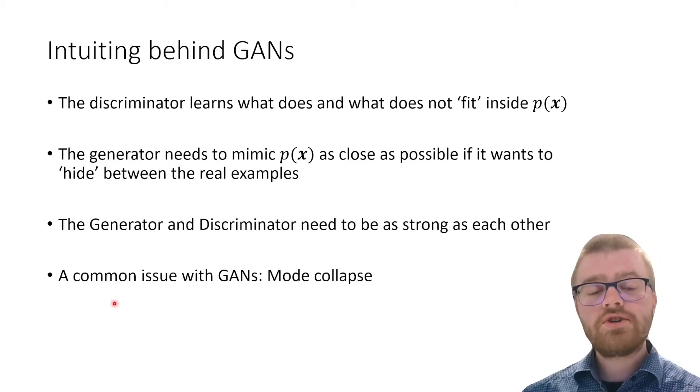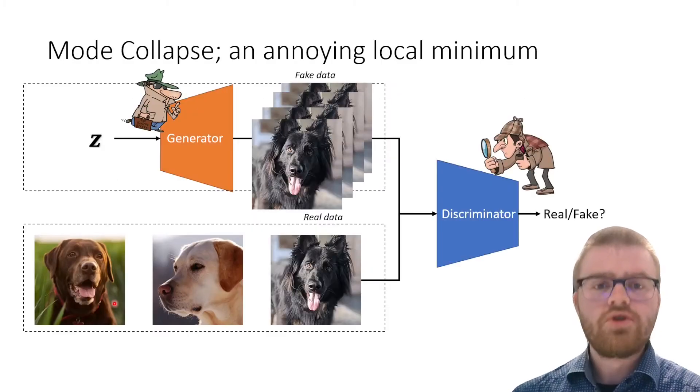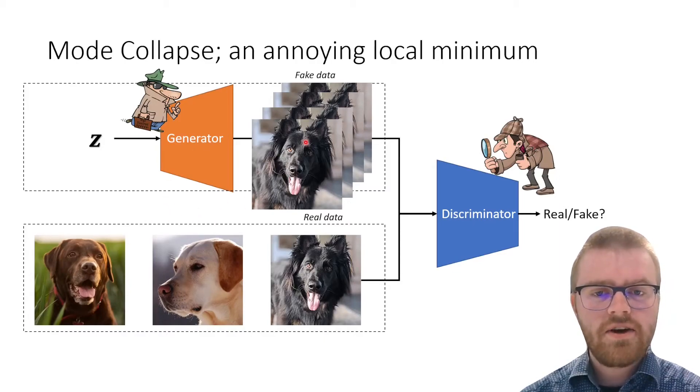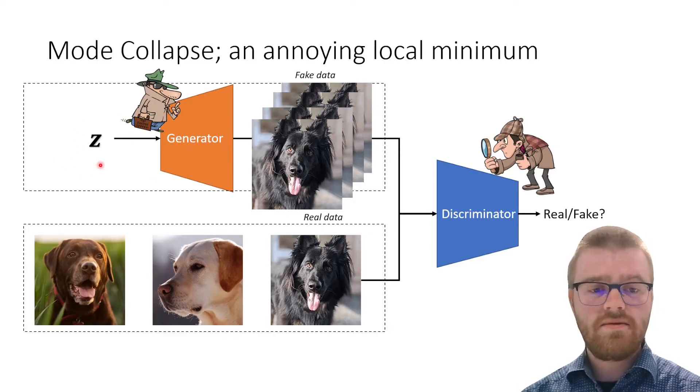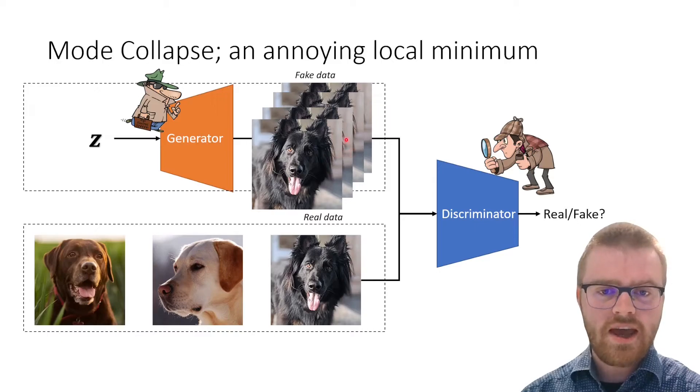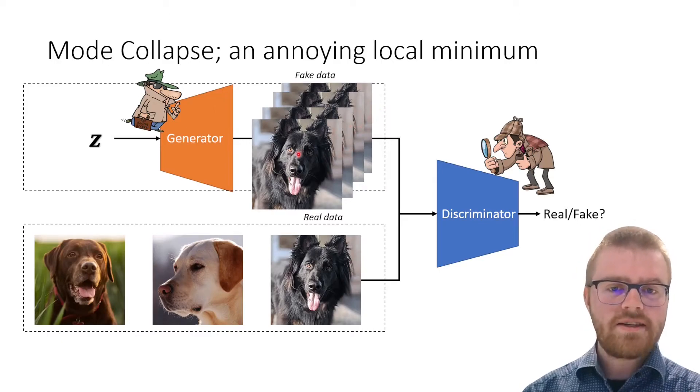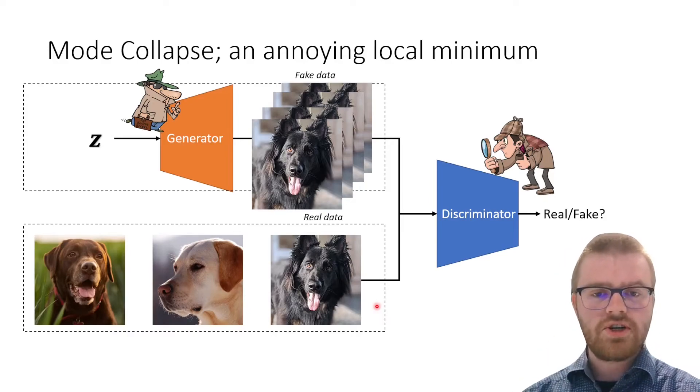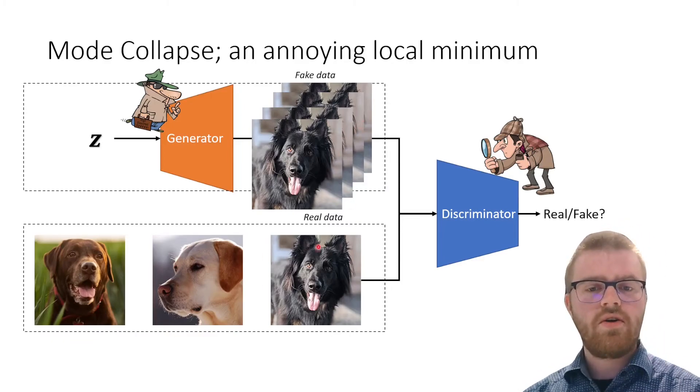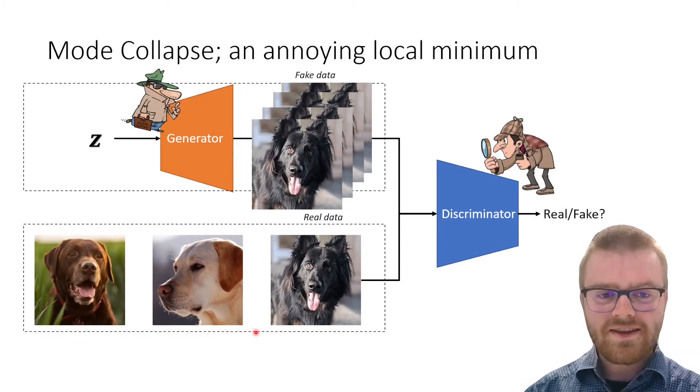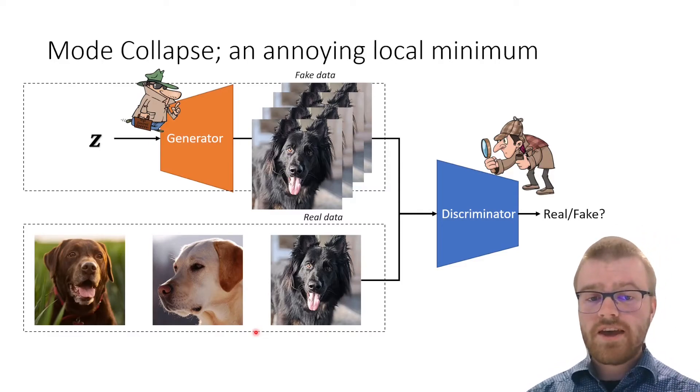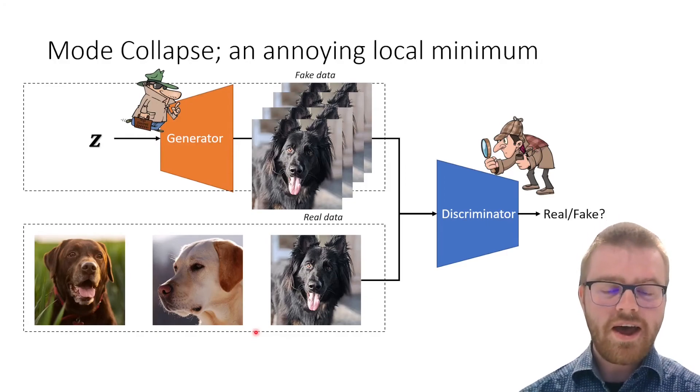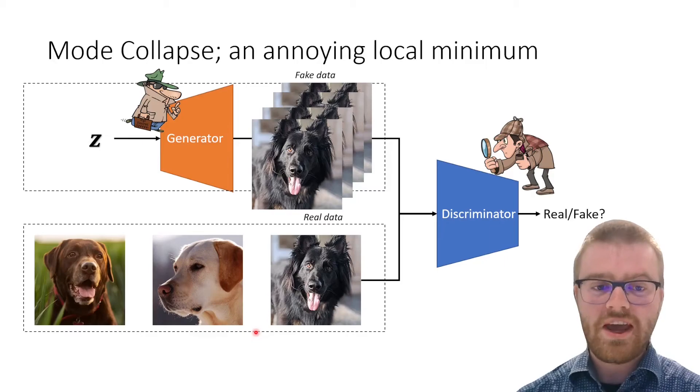One of the most common issues with GANs is mode collapse. Mode collapse is an annoying local minimum that happens when the generator, even though it gets different random latent codes, always outputs the same fake data. This happens if it gets stuck in a local minimum where it doesn't know how to get out of. Usually these images look very similar to one of the examples already in the training set. There are all kinds of ways to deal with this. I would say research them yourself if you want to work on GANs because they are outside the scope of this introductory lecture.